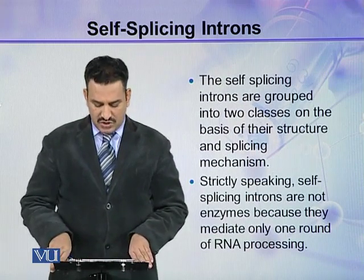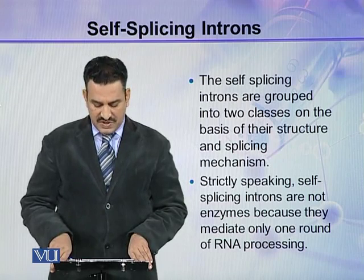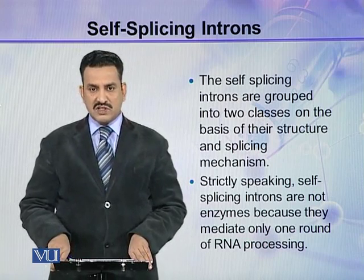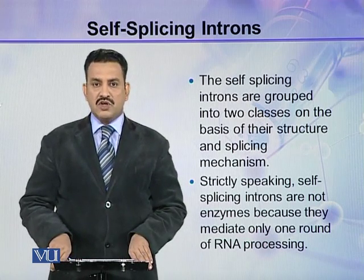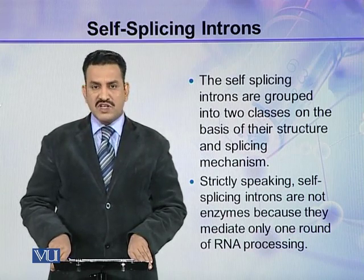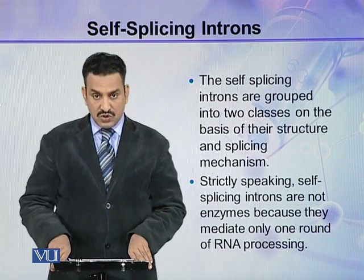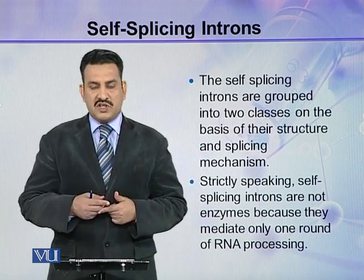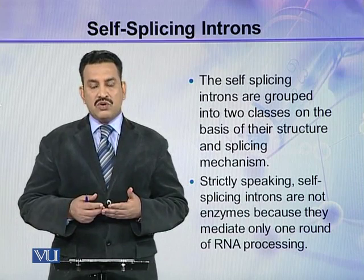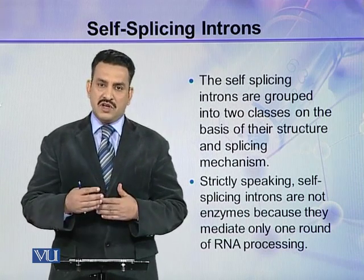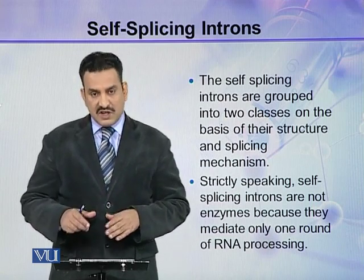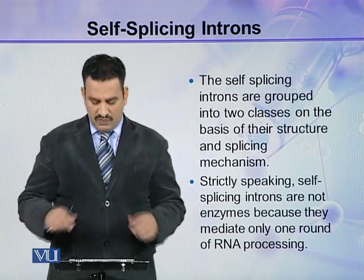The self-splicing introns are grouped into two classes on the basis of their structure and splicing mechanism: group 2 introns and group 1 introns. Strictly speaking, self-splicing introns are not enzymes because they mediate only one round of RNA processing, whereas enzymes can catalyze several reactions.